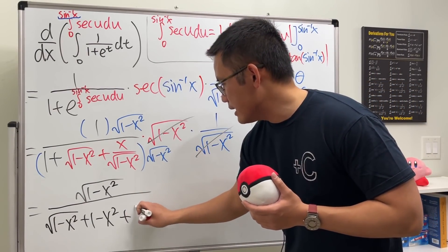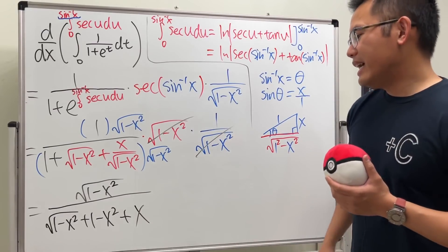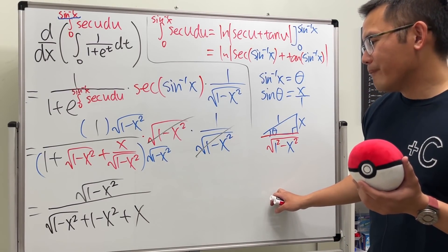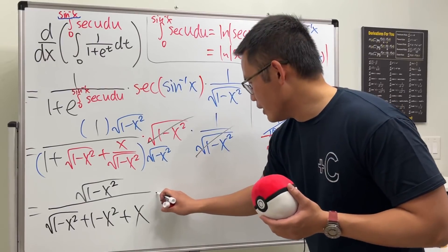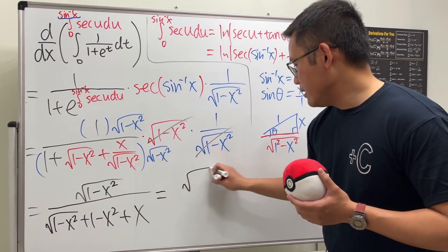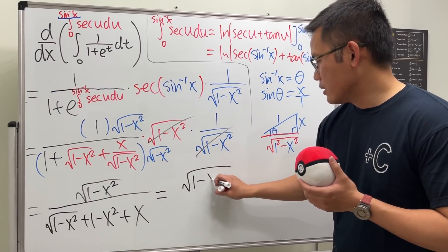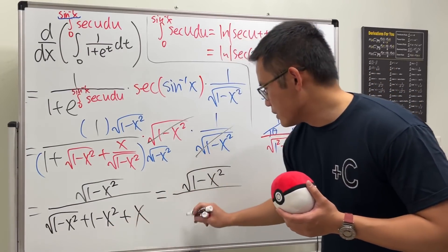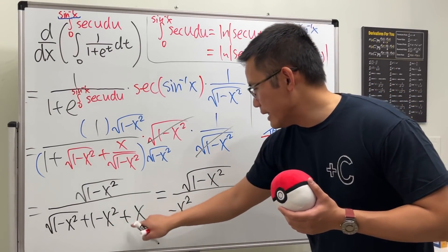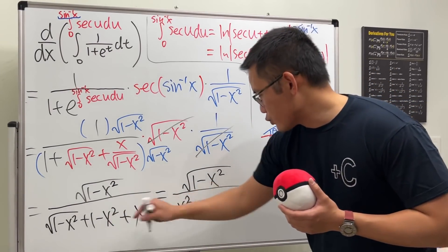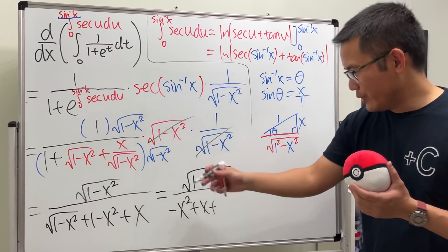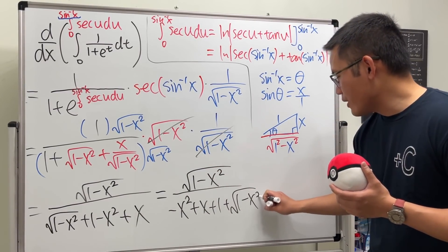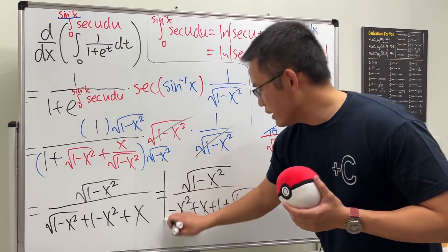So we just have the plus x. Look at that! Let's write this in a cleaner form: negative x squared plus x plus 1, all over square root of 1 minus x squared. How cool is this?